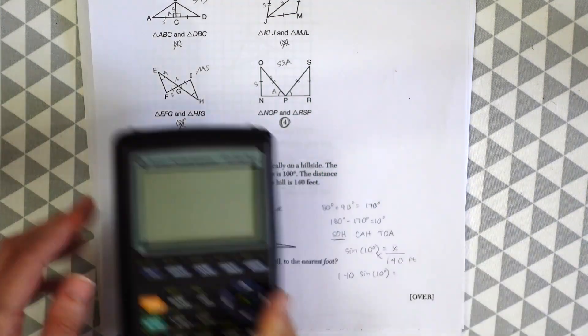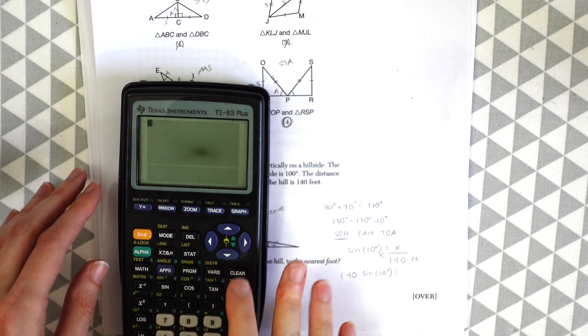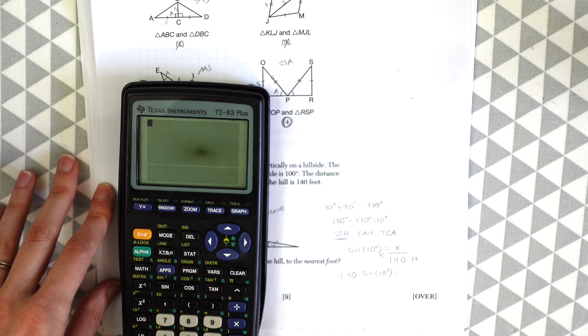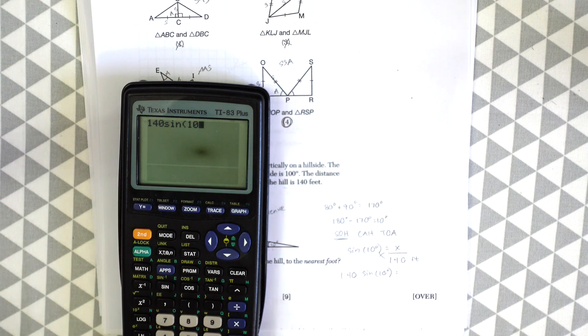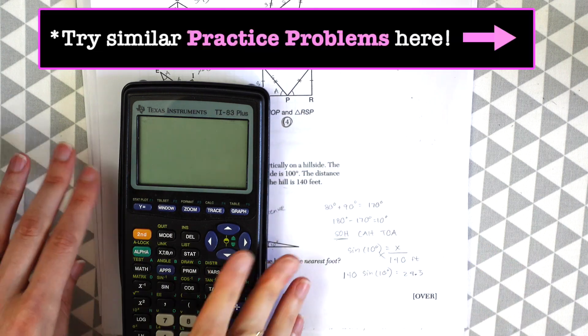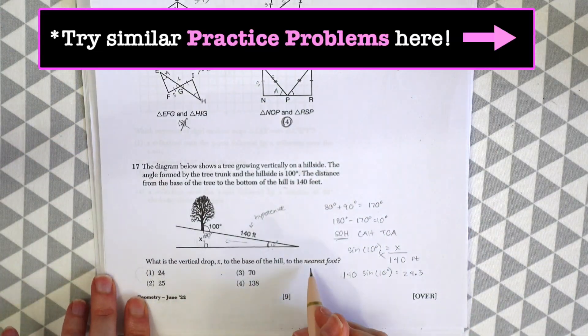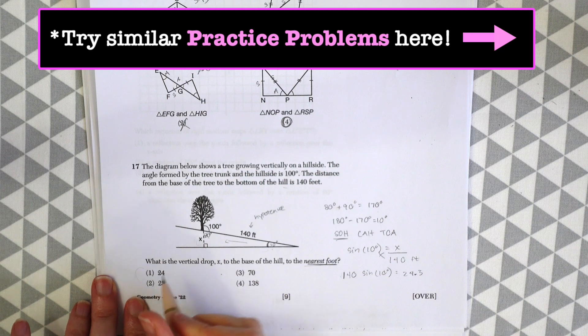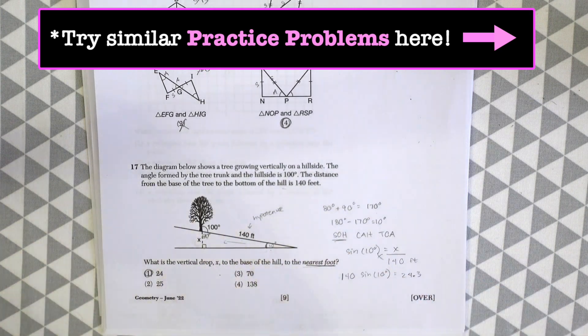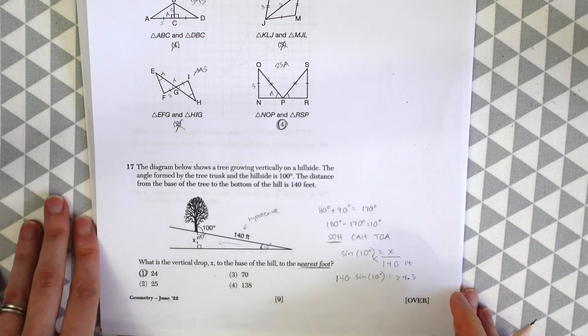And then just cross multiply, and we'll get 140 times sine of 10 degrees. So when you plug this into your calculator, just make sure you're in degree mode. So we're in degree mode, good. So then we can plug in 140 sine of 10 degrees. And you'll see that we'll get 24.3 something. And when you look at our answer choices, remember that they want this to the nearest foot. So our answer is 24. So 24.3 means we're going to round down to 24. So our answer is choice one.